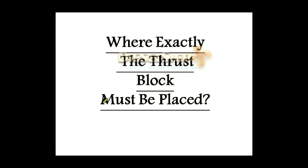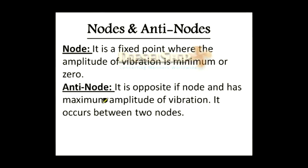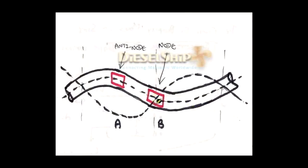To decide where exactly the thrust block must be located along the shafting system, we need to understand nodes and anti-nodes. A node is a point where there is no vibration or the amplitude of vibration is zero, while an anti-node is the point where vibration is maximum. Looking at the exaggerated vibratory characteristics of the shafting system, we can see two nodes and one anti-node on the vibratory curve. The thrust block must always be placed at the nodes, not at the anti-nodes.